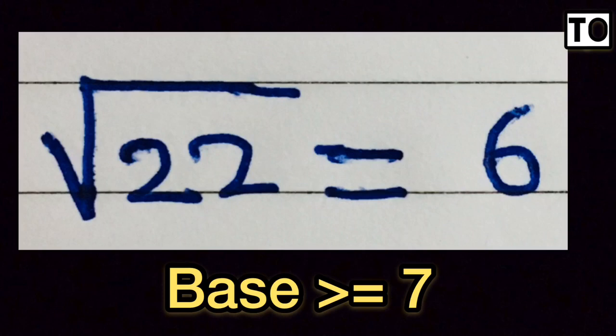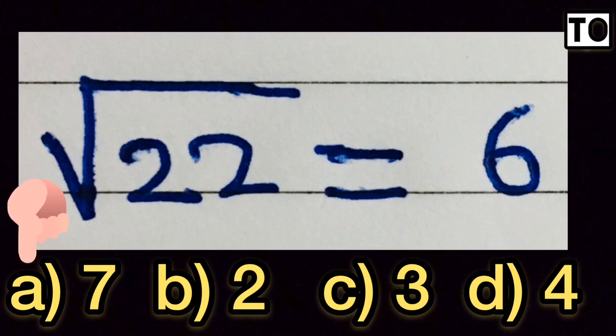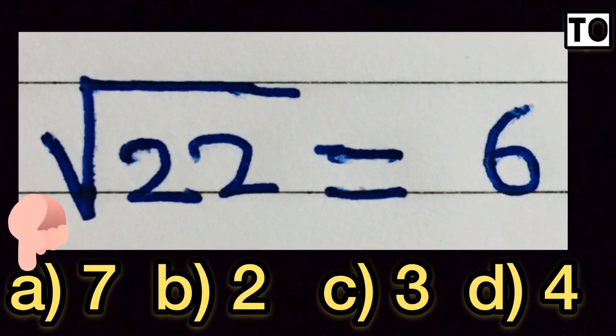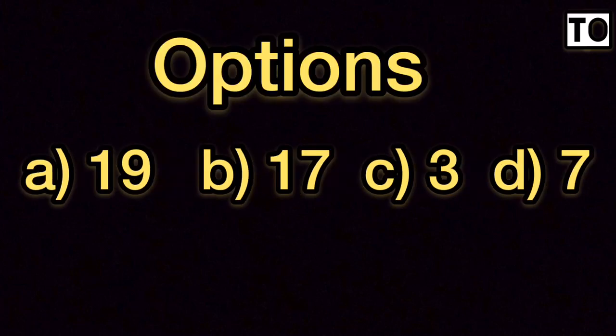So base is greater than or equal to 7. Looking at the options, option A is 7, which is greater than or equal to 7. Checking options 2 and 3, these are less than 7 and do not satisfy the condition. We now know the base value must be at least 7.